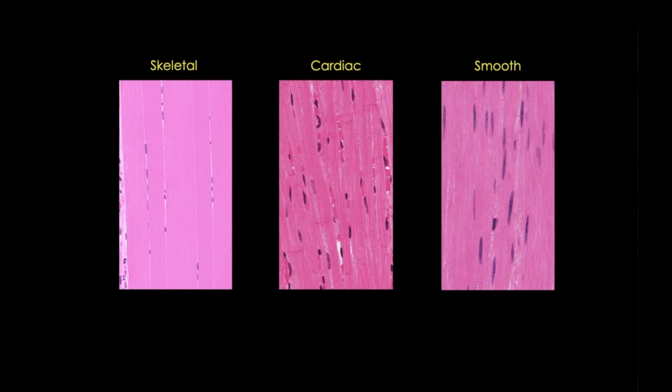Instead, you can focus on three different things. First, location. Remember, if you recognize where you are in the body, this can help you narrow down the type of muscle. For example, smooth muscle is found in blood vessels and throughout the digestive organs, while cardiac muscle is found in the heart.